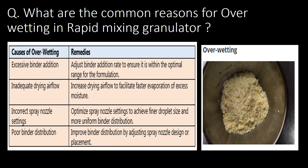What are the common reasons for over-wetting in Rapid Mixing Granulator? The four very commonly observed reasons for over-wetting in Rapid Mixing Granulator are: first, excessive binder addition; second, inadequate drying air flow; third, incorrect spray nozzle setting; and fourth, poor binder distribution.